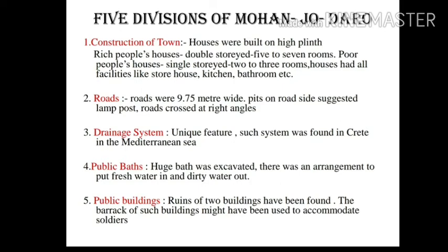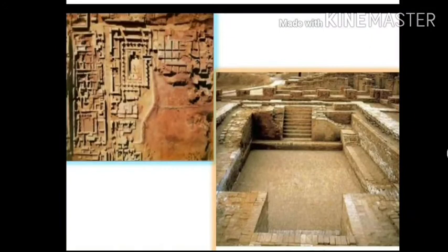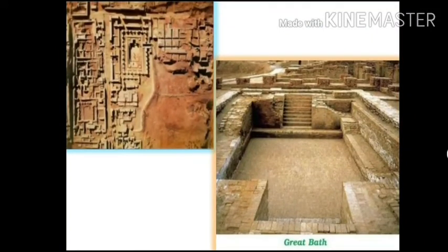The last division is public buildings. Ruins of two huge buildings have been found at Mohenjo-daro. Archaeologists believe they might have been used as a town hall, theatre, administrative office, or granary. A barrack was also found from Mohenjo-daro, which might have been used to accommodate soldiers. You can see the image of Mohenjo-daro town planning and the great bath here.